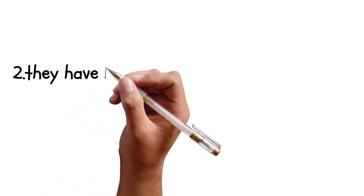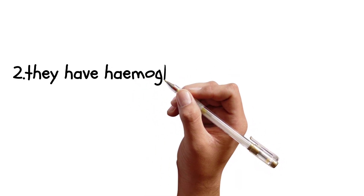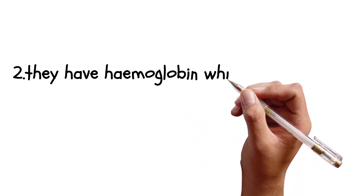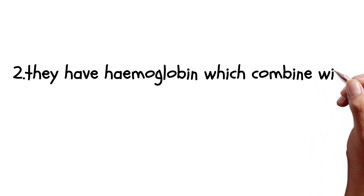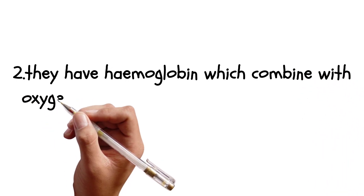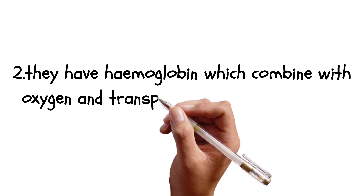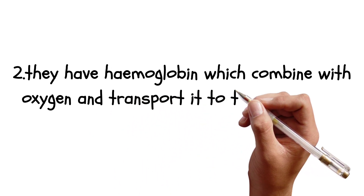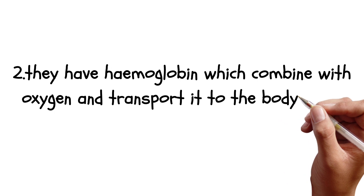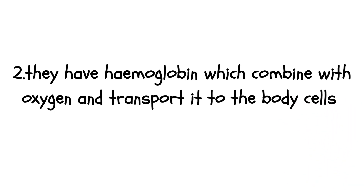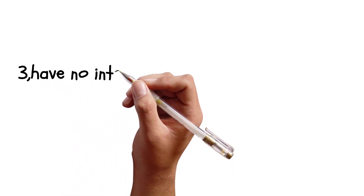Adaptation number two: they have hemoglobin, which combines with oxygen and transports it to the blood cells. This adaptation is very important to the red blood cells due to the fact that they have hemoglobin, which is red in color. It combines with oxygen and helps in the transport of hemoglobin to the different areas of the body.